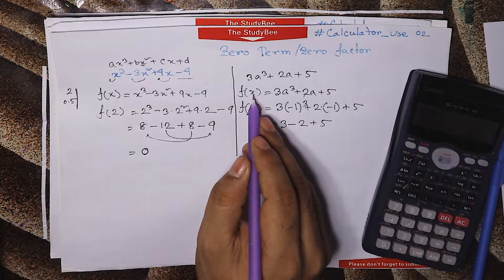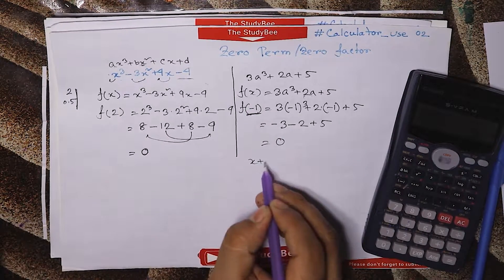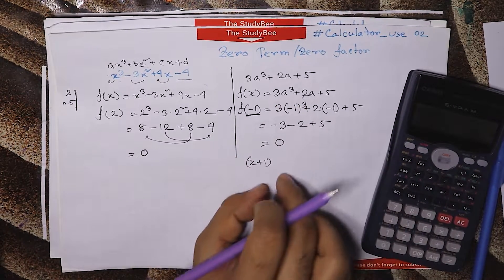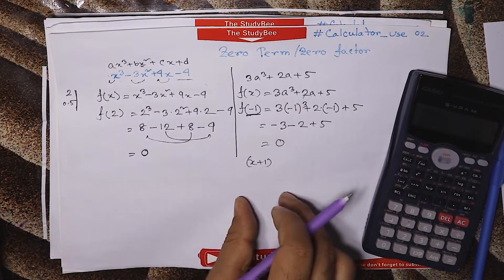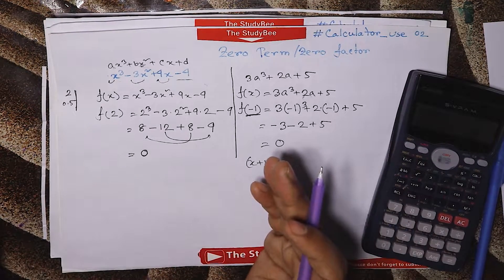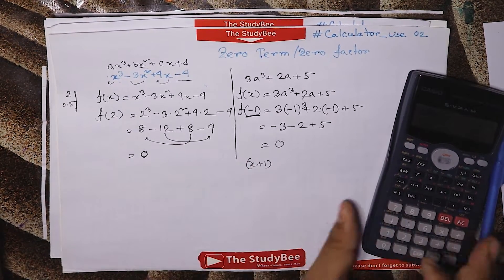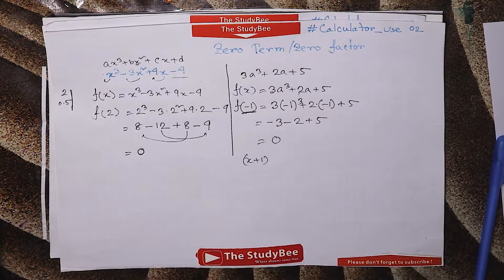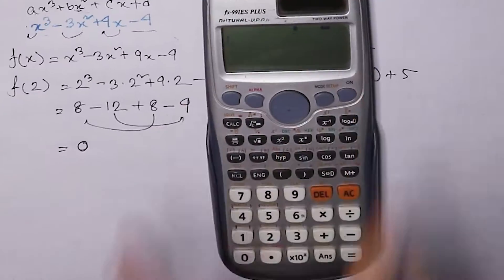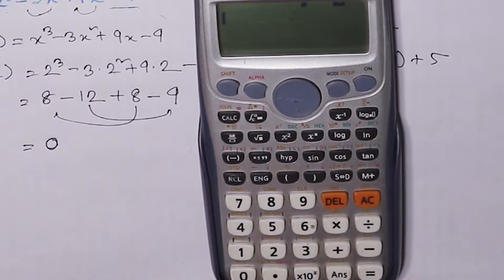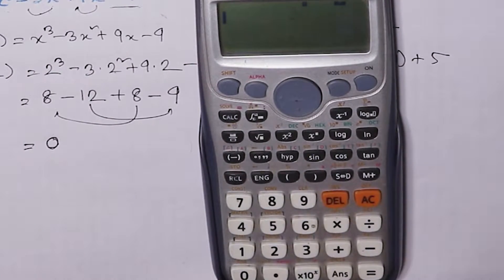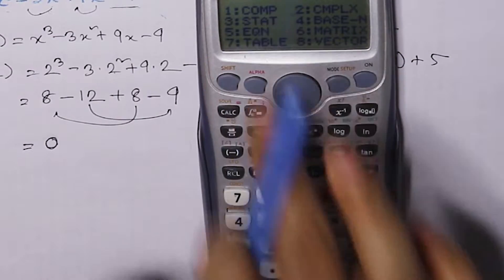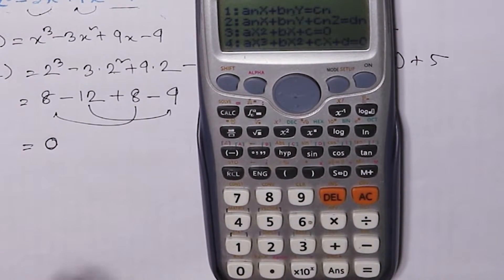I think the x is equal to 0, so x plus 1. f of x is equal to 0, and we are going to say 3.99 is equal to 0. In this project, we will put an S method to make an S method.